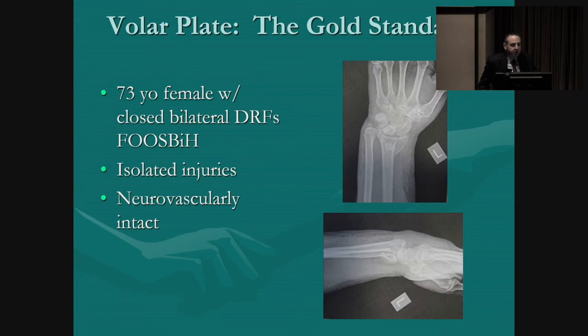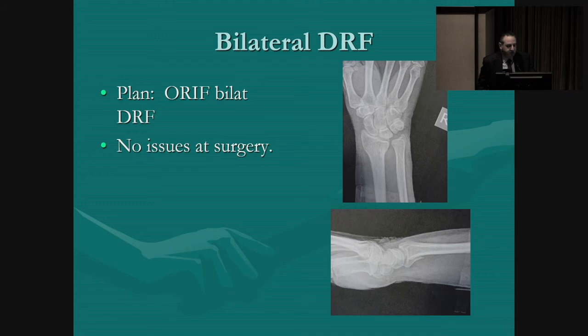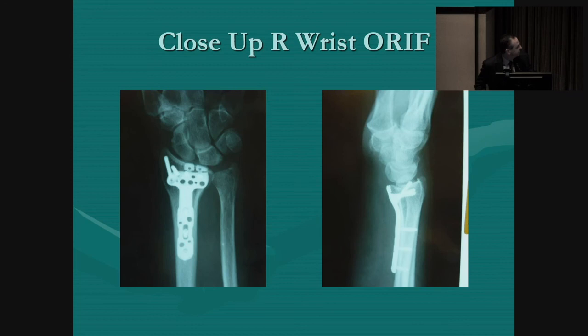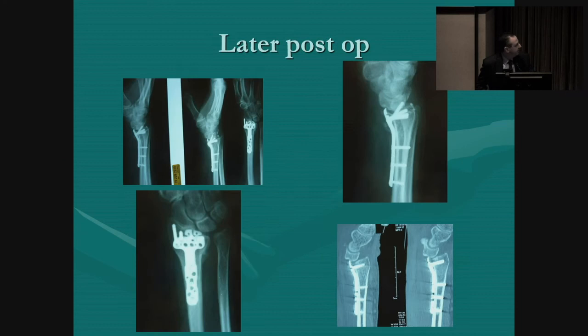Is volar plating the gold standard? Consider this case of bilateral distal radius fractures — neurovascularly intact patient who fell on both hands. She was treated with ORIF bilaterally. Early post-op x-rays looked good: carpus aligned, out to length, pretty smooth reconstruction of the articular surface. On the right side I even put a plate with extensions to try to capture the lunate facet of the radius. I left the OR feeling pretty good. But at six weeks, the scaphoid and lunate were sitting right on those extensions — it didn't look good on x-rays or on the CT scan.